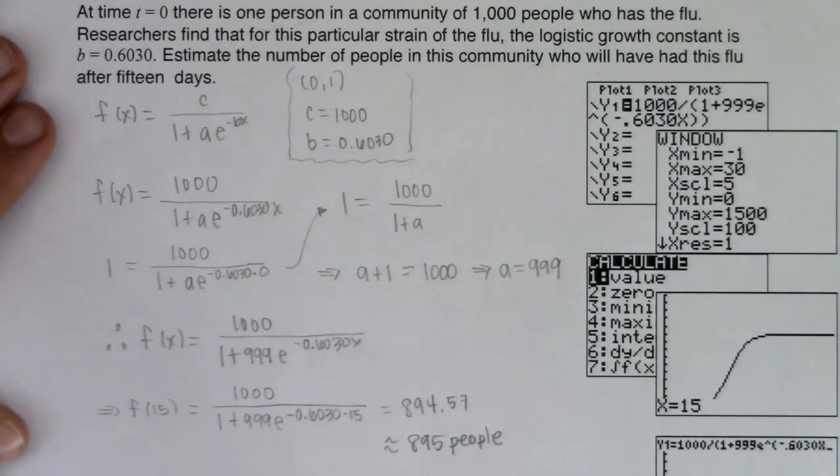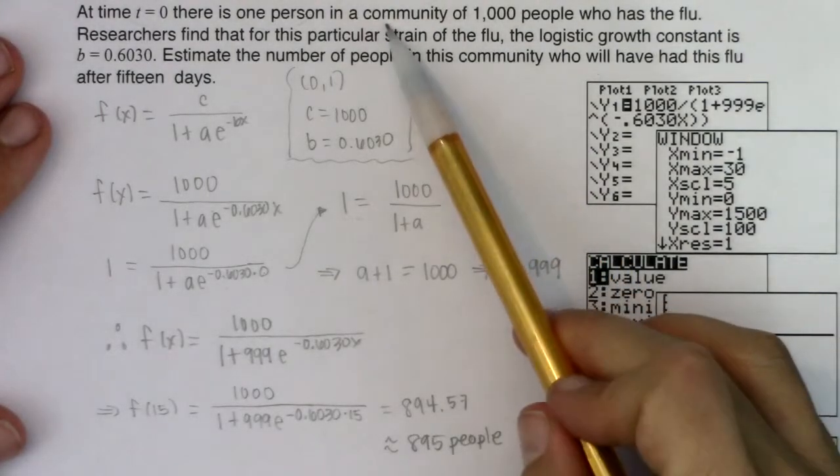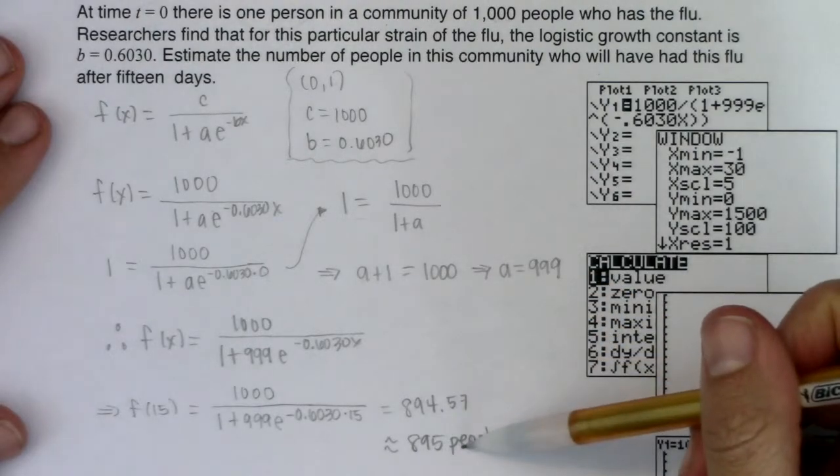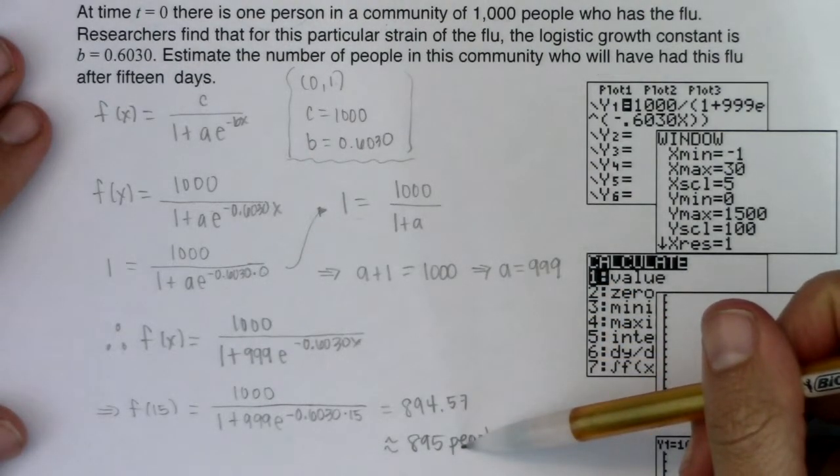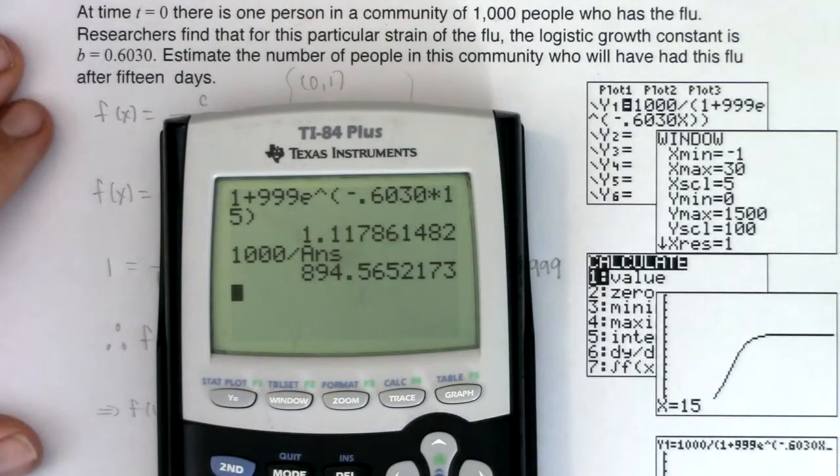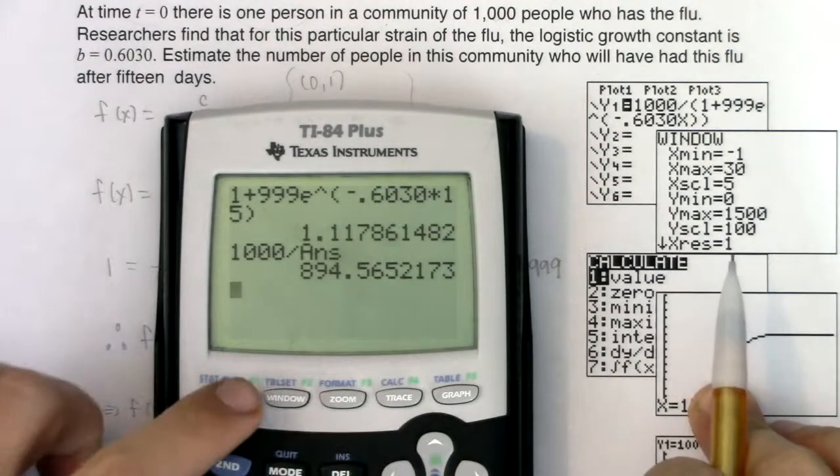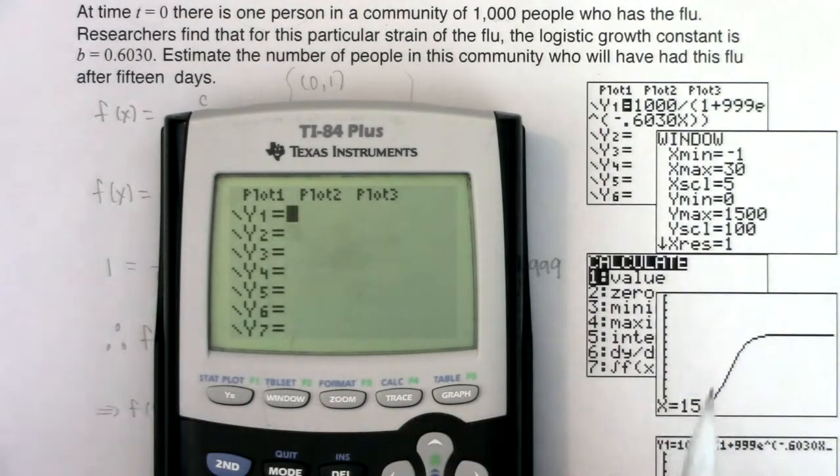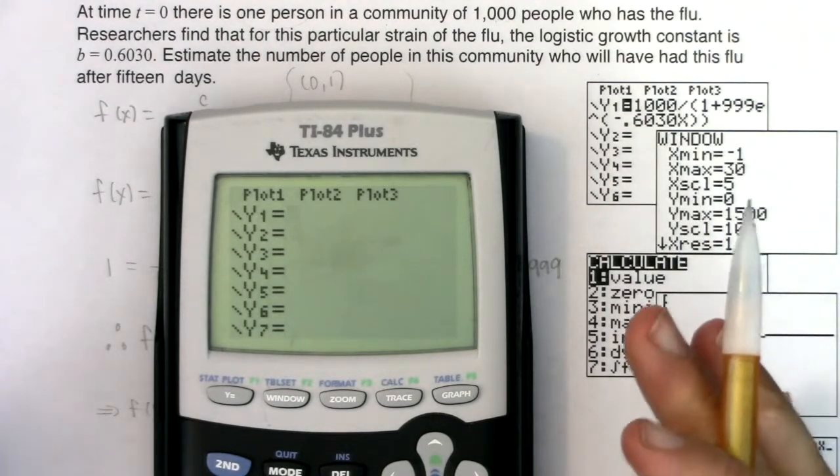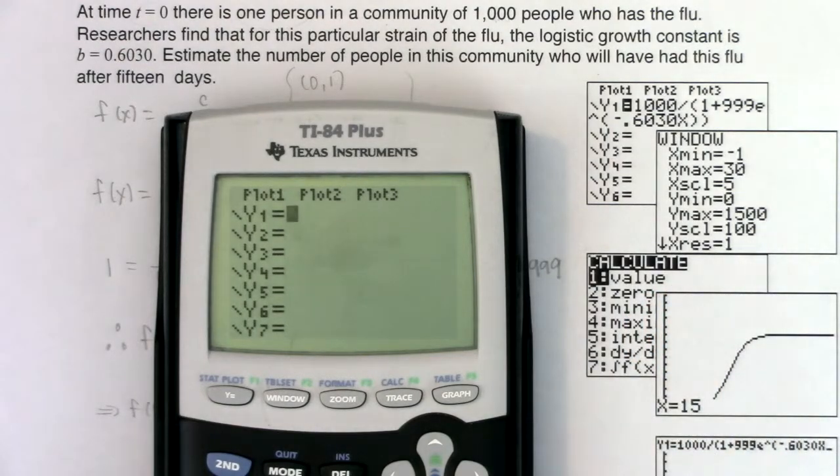So that means that if this flu is spreading at this rate, that out of those thousand people, about 895 will have gotten the flu 15 days after that outbreak. Now I do want to show you how you could figure this out on your calculator because it's always great to have technology around to check your answer. So let me clear out what I have. The trickiest part is going to be getting that exponential model properly put into your y equals and then adjusting your window.